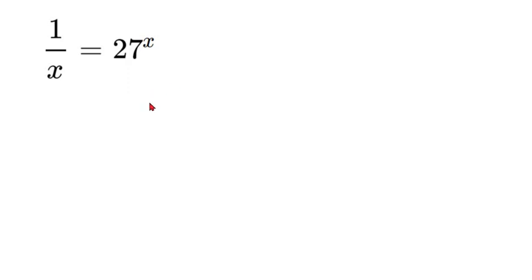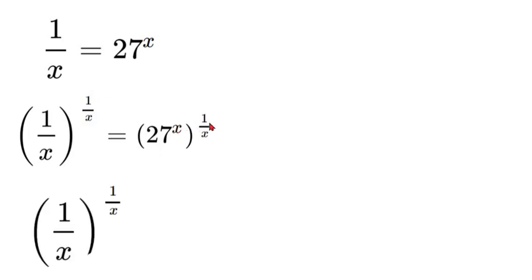So the first thing we're going to do with this one is we're going to set both sides to the power of 1 over x. So we'll write that out. Now what's going to happen is our x and 1 over x here are going to cancel.